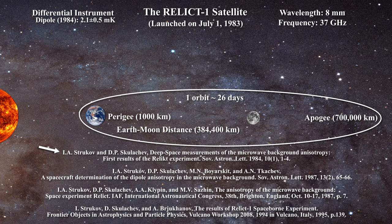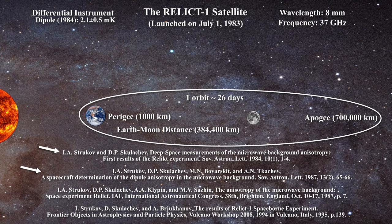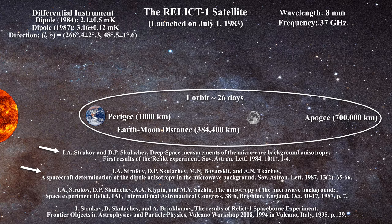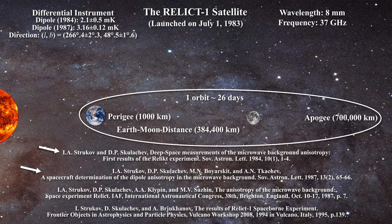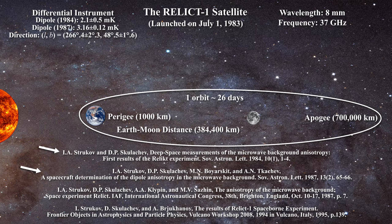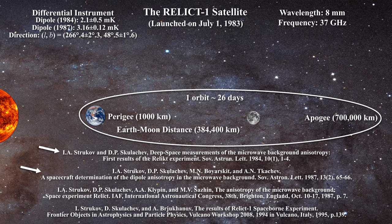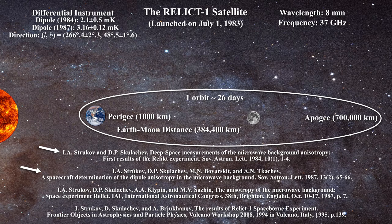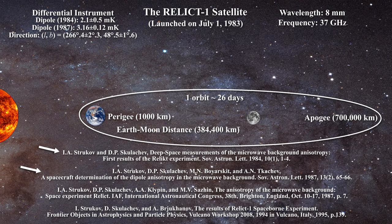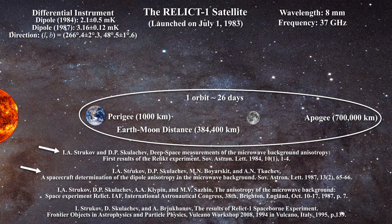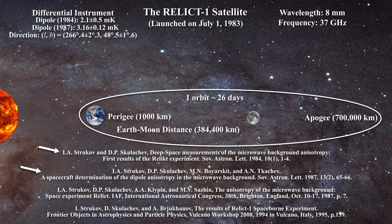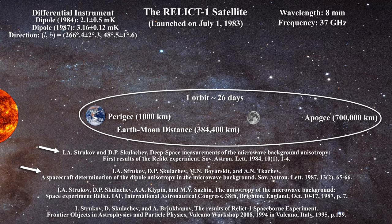Three years later, in 1987, the Relit team published a new higher value of 3.16 ± 0.12 mK. The new value is outside the initial error bar of their first measurement. However, it was in agreement with values obtained on Earth, as reported by Fixsen et al. and Lubin et al. In the end, the Relit team did not share the 2006 Nobel Prize. This was awarded to the COBE team despite Relit-1's efforts to measure the microwave background anisotropies from space.